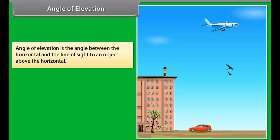In this picture, an observer is standing at the top of a building and looking straight ahead at birds which are in the horizontal line. The observer must raise his eyes to see the airplane, which is in the slanting line — this line is also called the line of sight. The angle formed between the two lines is called the angle of elevation. Hence, the angle of elevation is the angle between a horizontal line and the line joining the observer's eye to some object above the horizontal line.